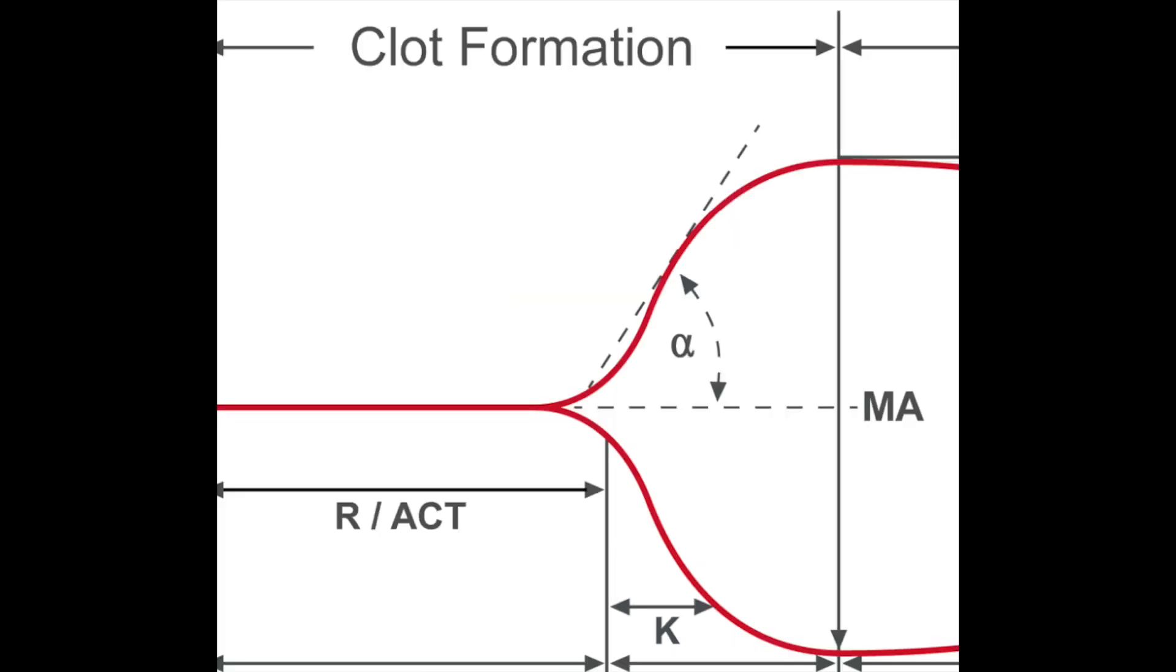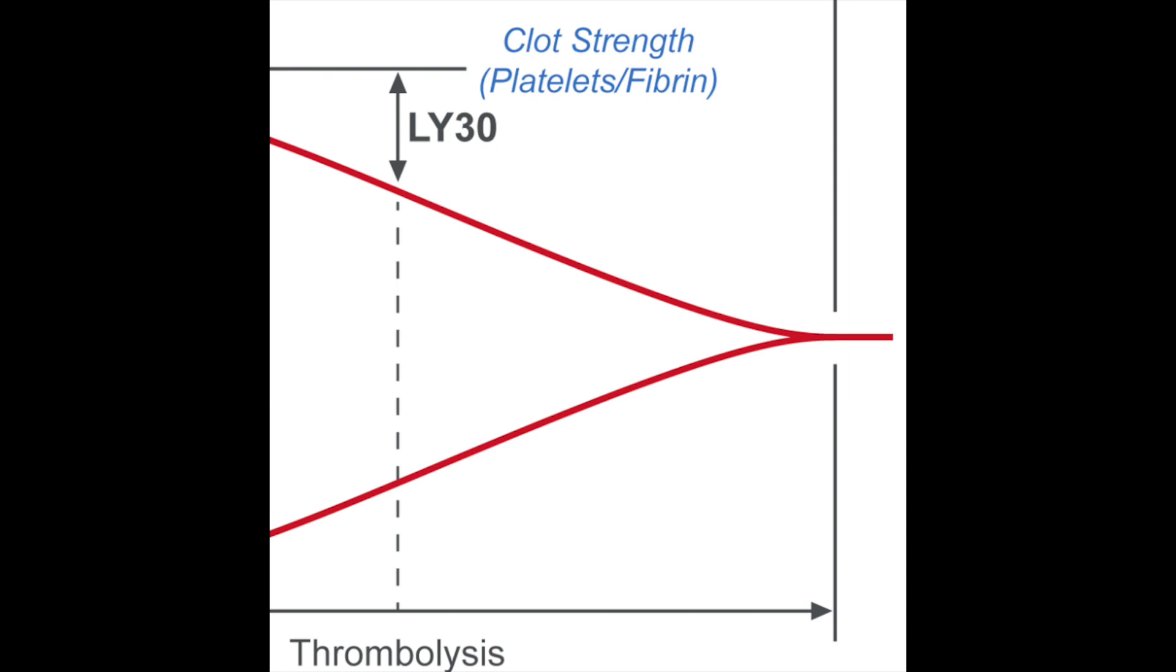Fourth one is MA, that's maximal amplitude. MA measures maximal clot strength and is equal to the maximal width of the TEG. This represents clot strength as determined by platelet number and function as well as fibrin cross-linking to form a stable clot.